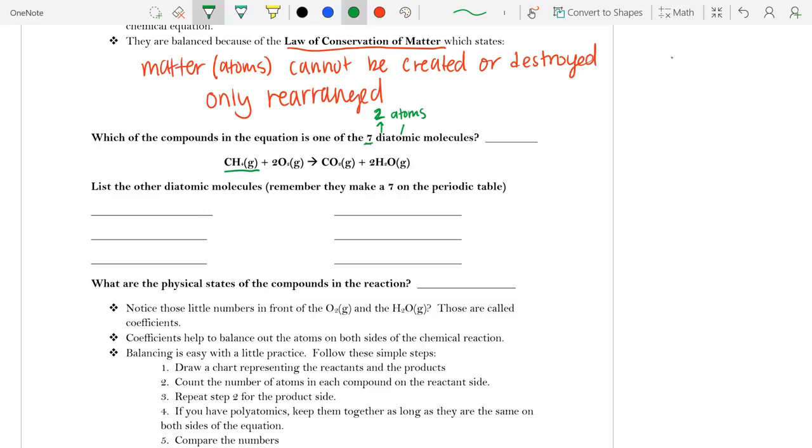So if we look here, this molecule, CH4, has one carbon and four hydrogen, so this is a total of five atoms. Now, five atoms is not two atoms, so that is not our diatomic molecule.